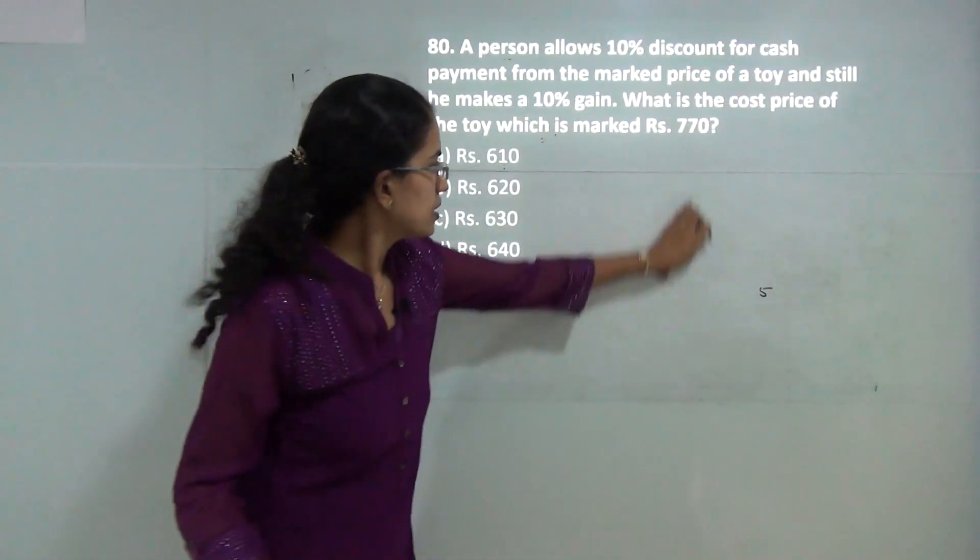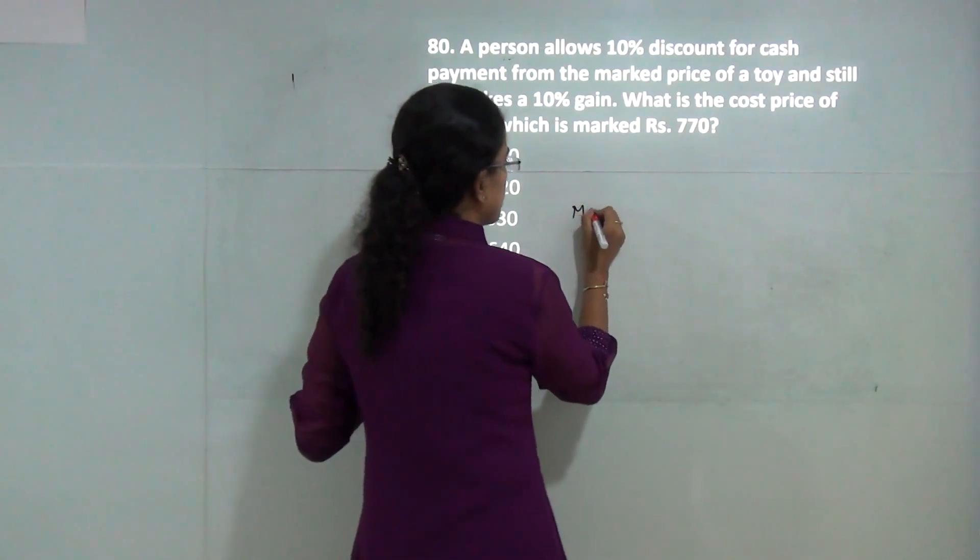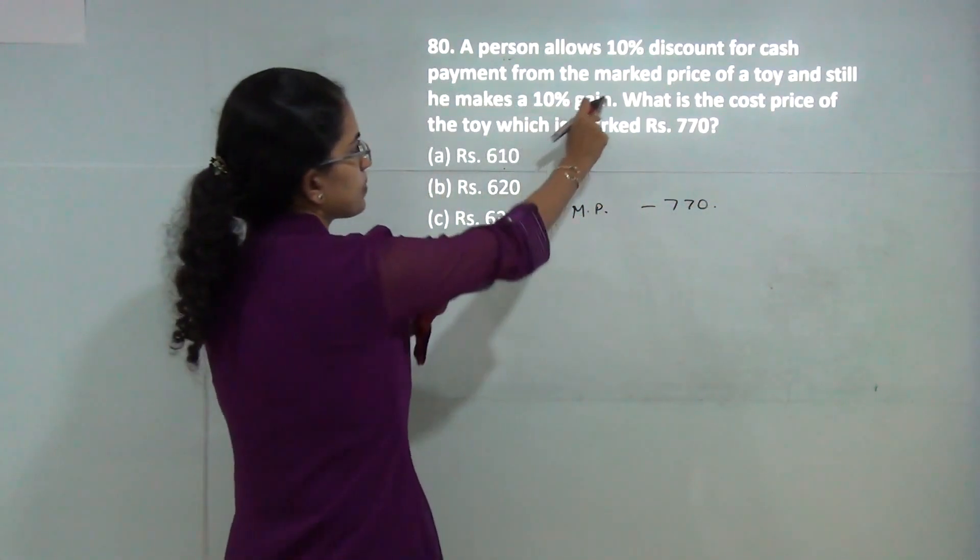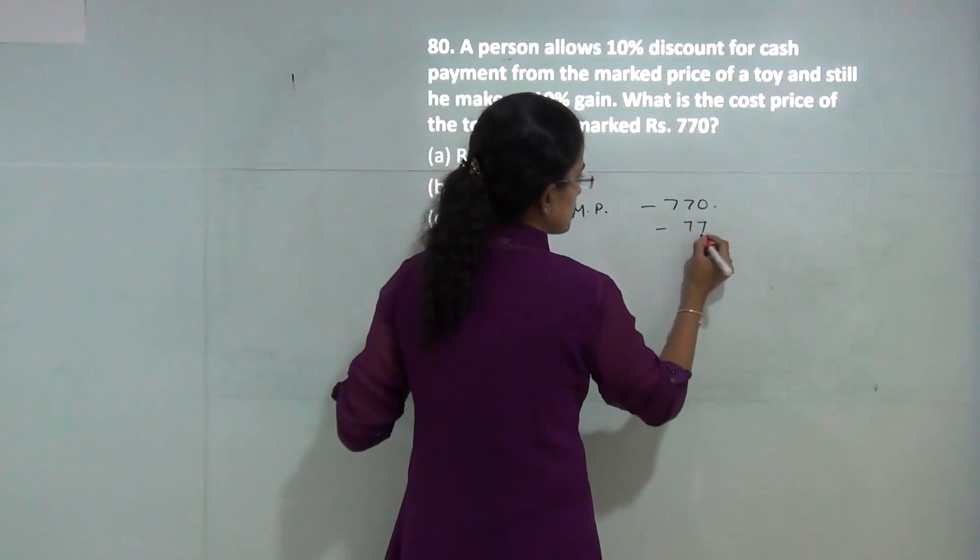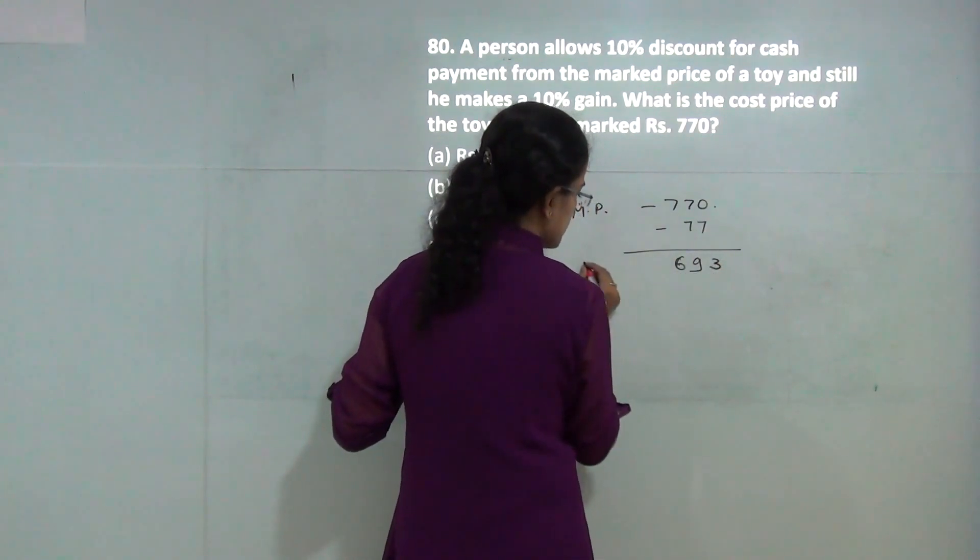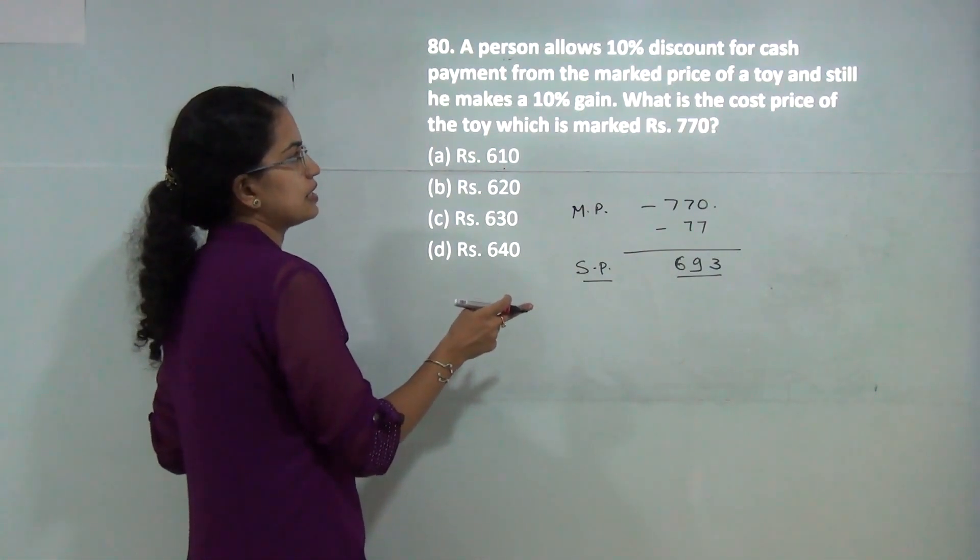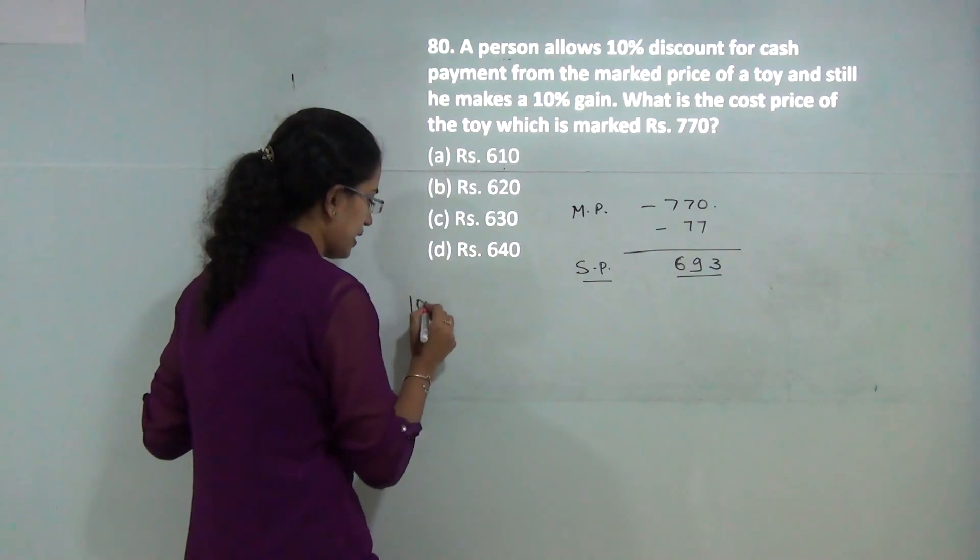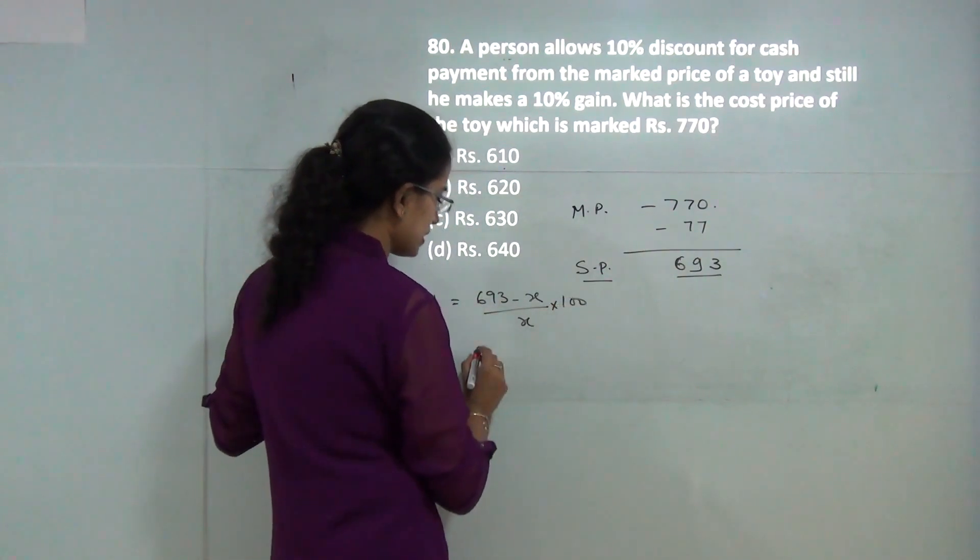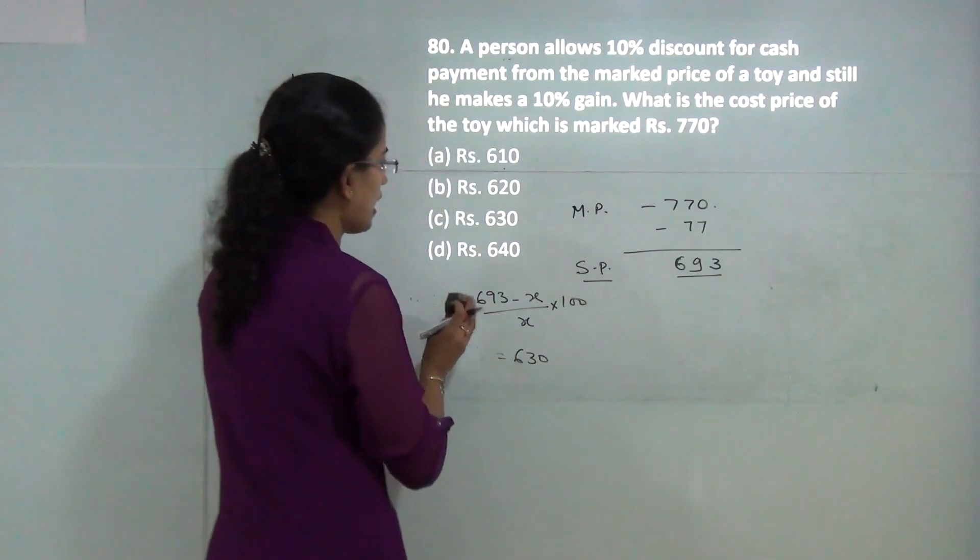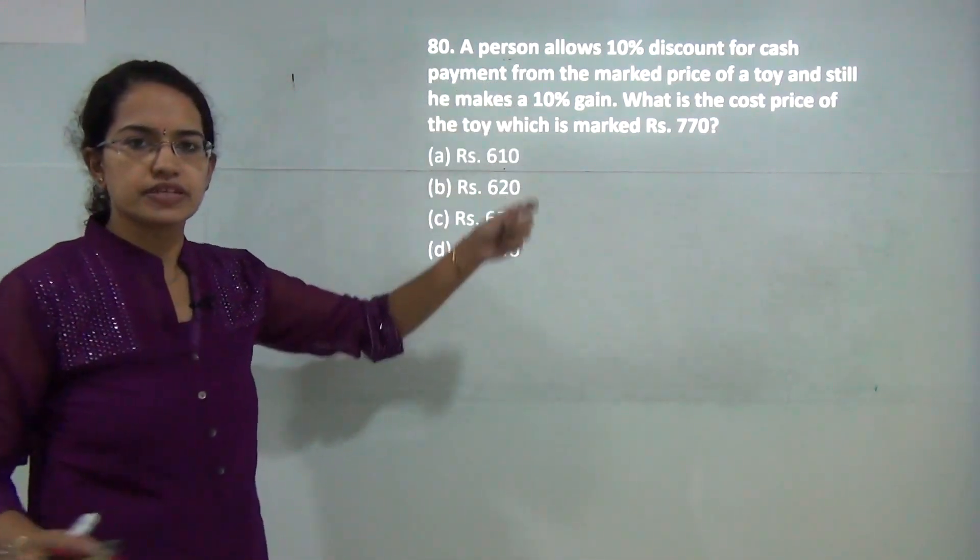The marked price is 770. With a 10% discount, that's minus 77 rupees, giving a selling price of 693. This selling price includes a 10% gain, so 693 minus cost price divided by cost price times 100 equals 10. Solving gives cost price equals 630. So cost price is 630, selling price is 693, and marked price is 770.